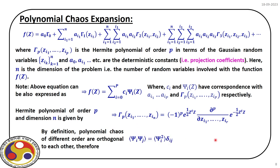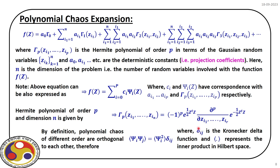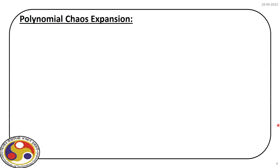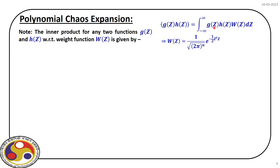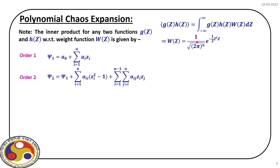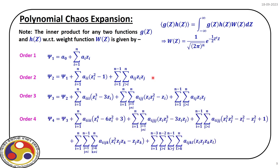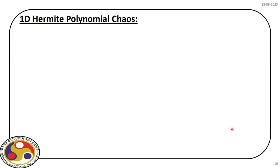Revisiting the inner product for orthogonality: for two functions with respect to a weight function, the orthogonality relation defines how orthogonal polynomials are constructed. For Hermite polynomials the weight function has a specific generic form. The first-order polynomial is a_0 + Σa_i z_i; second-order continues; third and fourth order are also defined. By the fourth order the number of terms increases substantially, which is why it is called polynomial chaos.